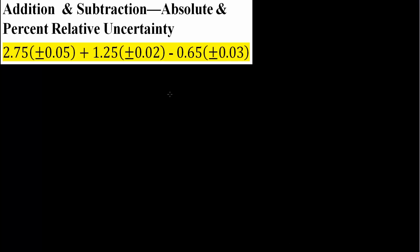In this video we will be adding and subtracting and then finding the absolute and percent relative uncertainty. So we have three numbers: 2.75 plus or minus 0.05 plus 1.25 plus or minus 0.02 minus 0.65